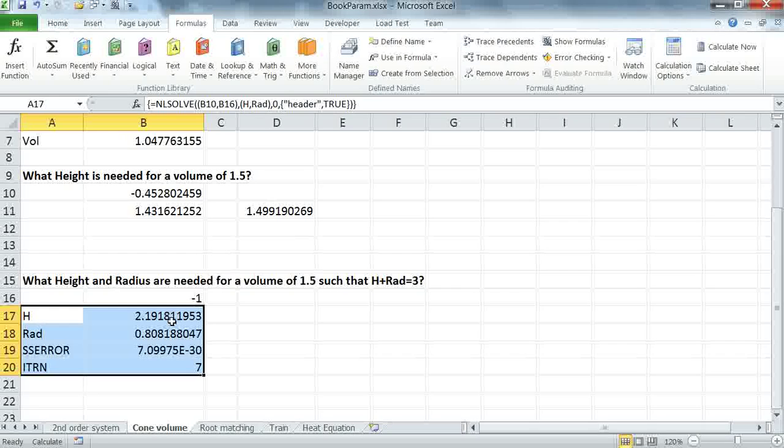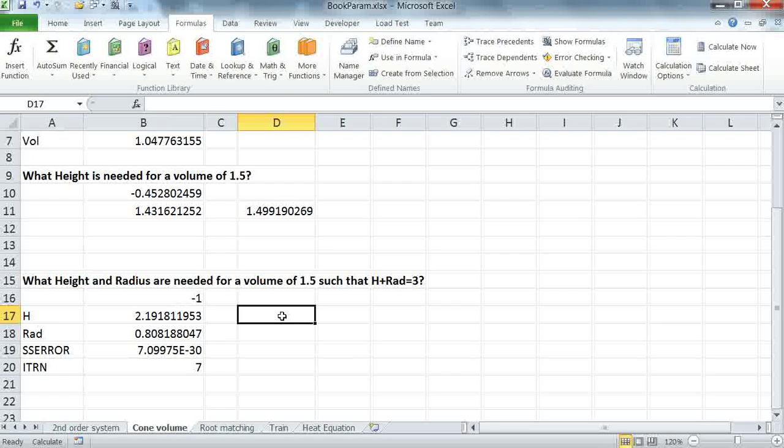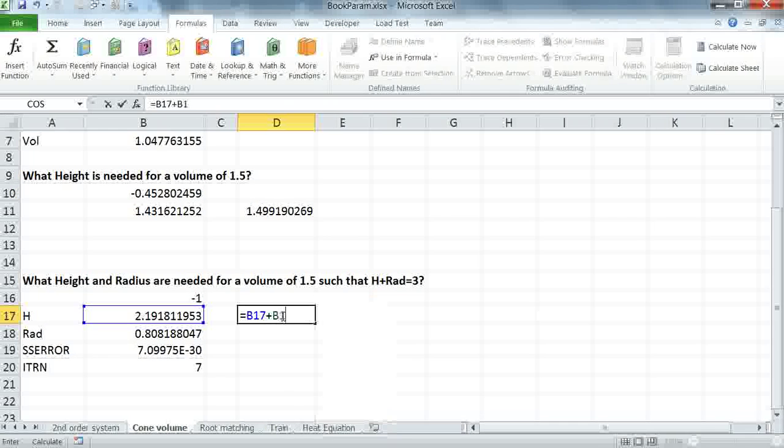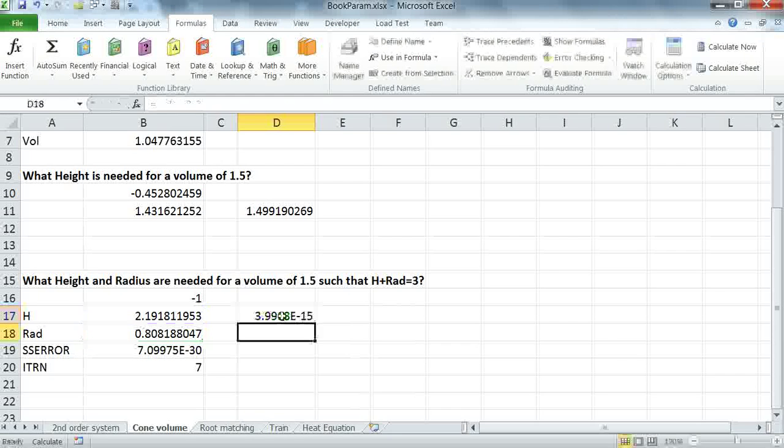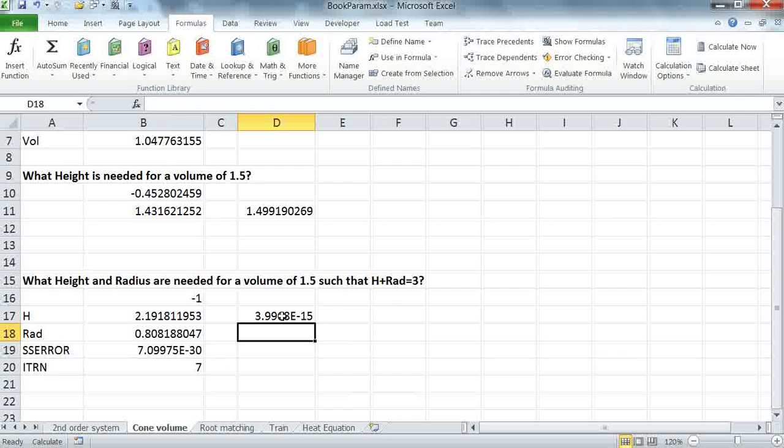Let's verify how well our constraint has been satisfied, so we can add both the height and the radius here plus P18 minus 3, and we get pretty close to 0 within the tolerances of the solver.